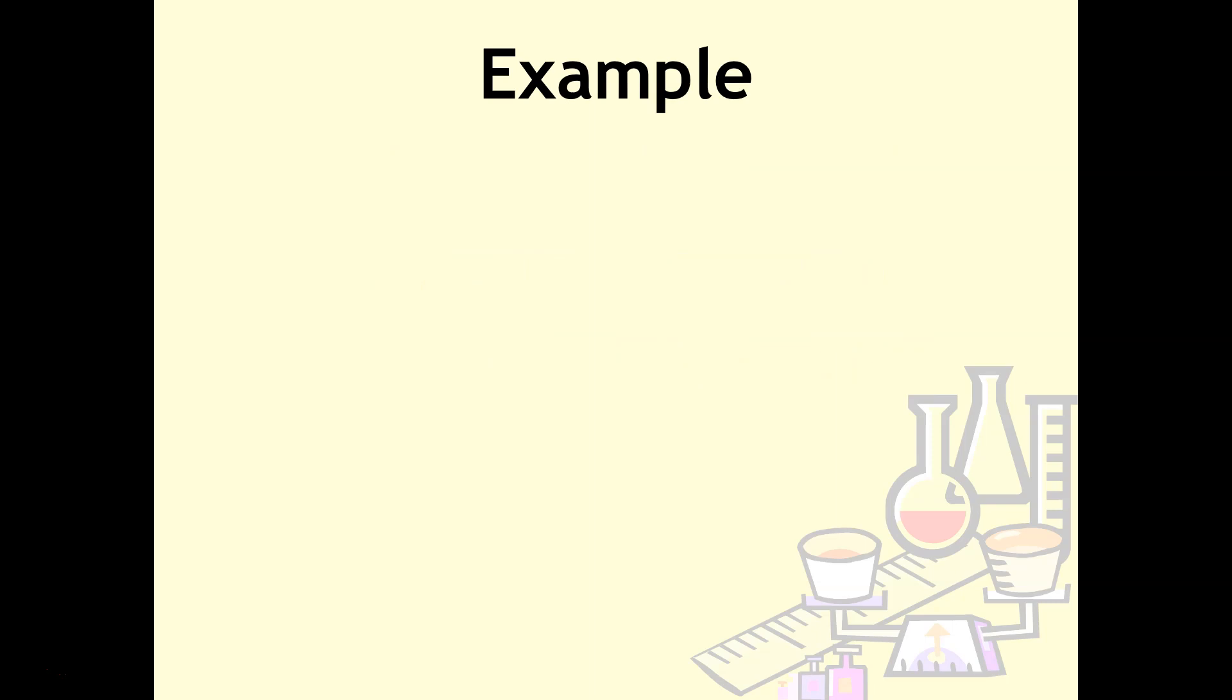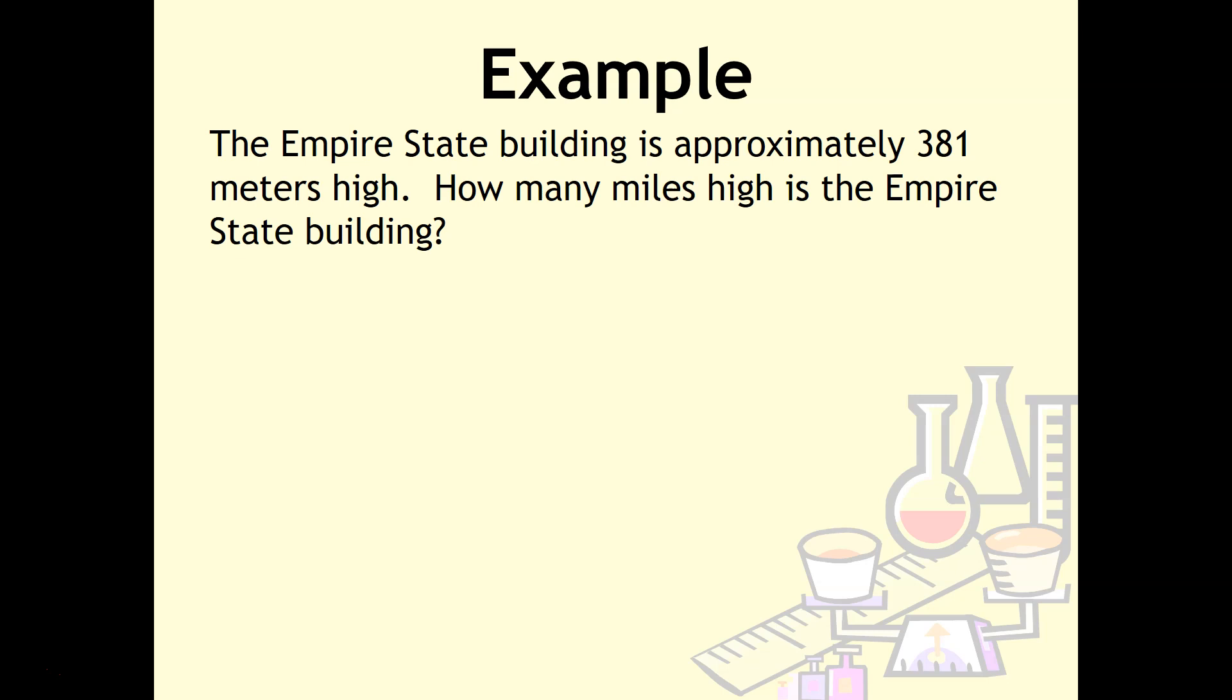Here's an example using those conversion factors. The Empire State Building is approximately 381 meters high. How many miles high is the Empire State Building? We take our known and unknown, then do our plan. In this problem, we'll have four conversion factors. This one uses both of those new conversion factors. Once we get to centimeters, the conversion relating centimeters to inches is the one we just learned on the previous slide. And to go from feet to miles, we learned that one also on the previous slide. A lot of the work is done here, so now we just plug it in. We'll take 381 meters over one.